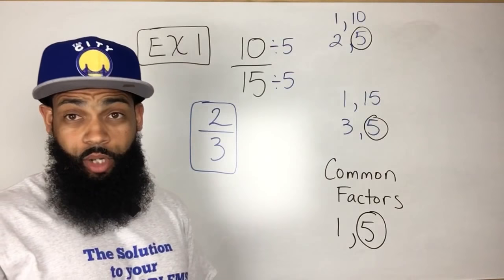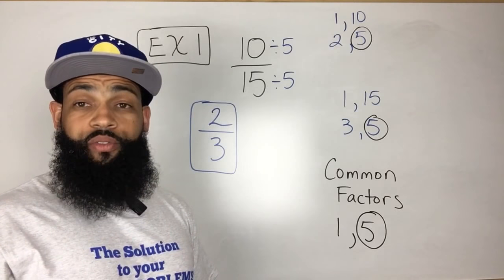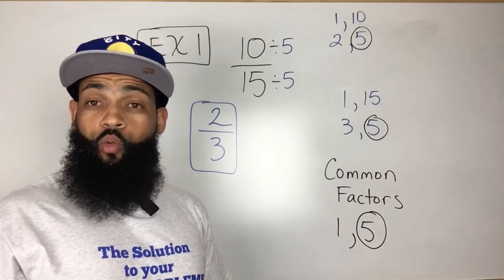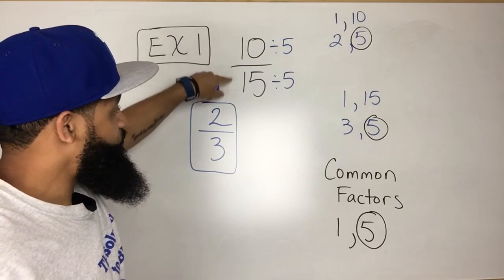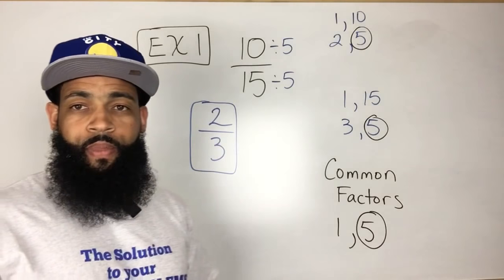First of all, both of these are prime numbers. So the only factors of 2 are 1 and 2. The only factors of 3 are 1 and 3. So this is 10 over 15 simplified or reduced is 2 over 3.